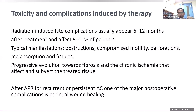Radiation-induced late complications usually appear 6 to 12 months after treatment and affect around 5 to 11 percent of patients. Typical manifestations due to progressive fibrosis from chronic ischemia include strictures, obstruction, compromised gut motility, perforation, malabsorption, and fistulas. After surgery for recurrent or persistent disease, one major post-operative complication is perianal wound healing.